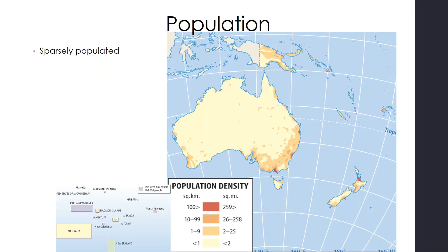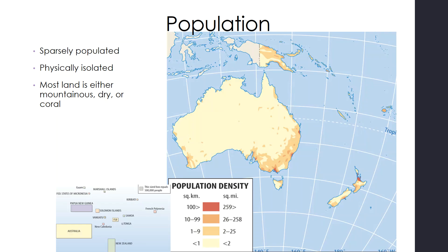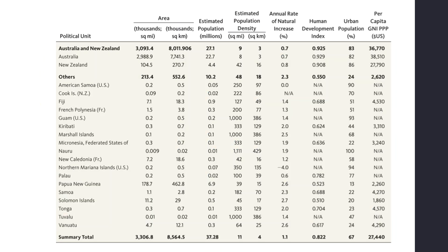When we look at the population of the region, it is very sparsely populated and physically isolated from other large continents. Most land is either mountainous, dry, or coral, so it cannot support large populations. If we look at Australia's population density, it is mostly near the coast, and the interior is very sparsely populated.